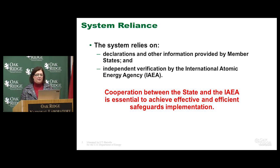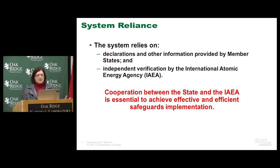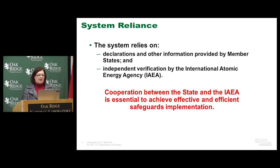One declares what they have and the other verifies. There has to be a very close connection in this communication line. This is what the way that we are approaching the international safeguards system now. We are tying this communication, this cooperation, with the IAEA very tightly — either between the state and the IAEA or between the regional system and the IAEA.